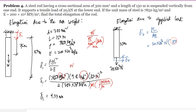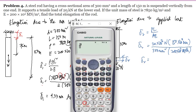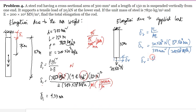Using δ₂ = PL/AE: load P = 20 × 10³ N, length L = 150 m = 150 × 10³ mm, area A = 300 mm², modulus of elasticity E = 200 × 10³ MPa. Substituting: δ₂ = (20 × 10³ × 150 × 10³) / (300 × 200 × 10³) = 50 mm.